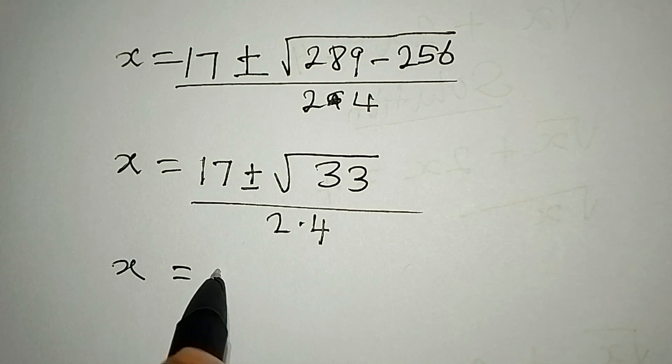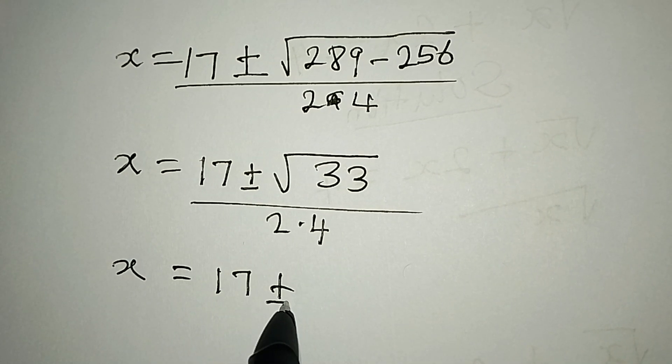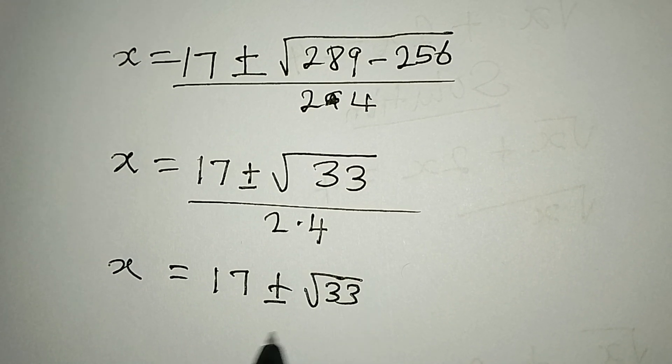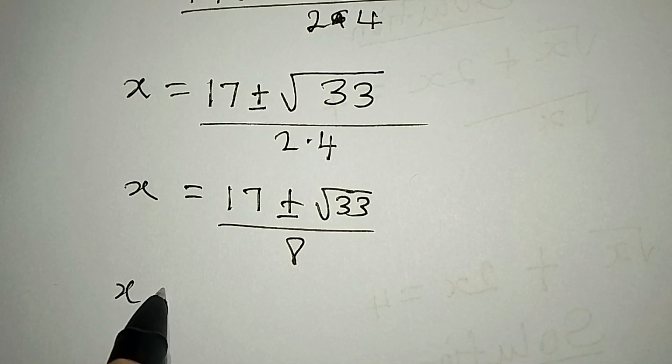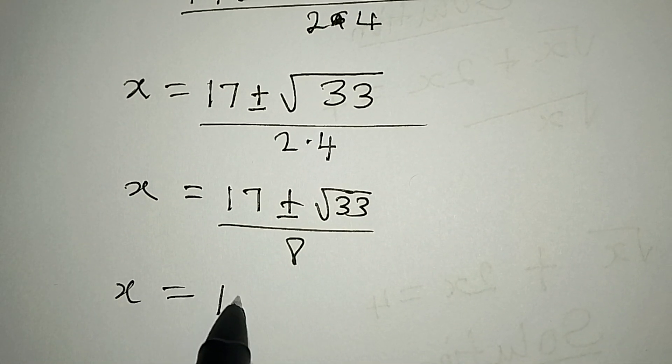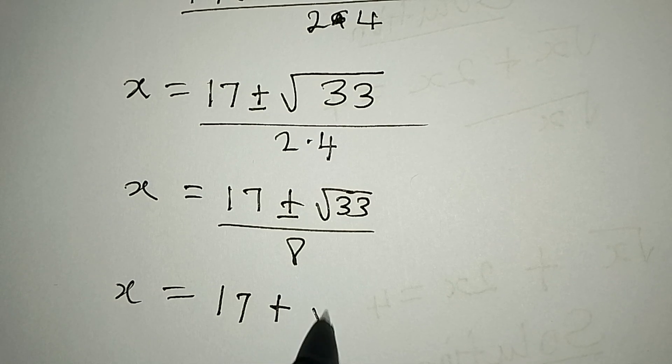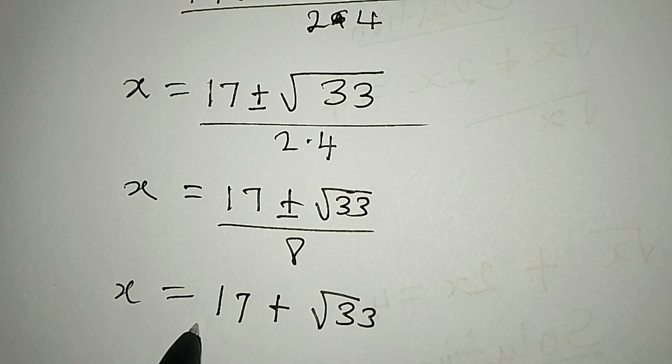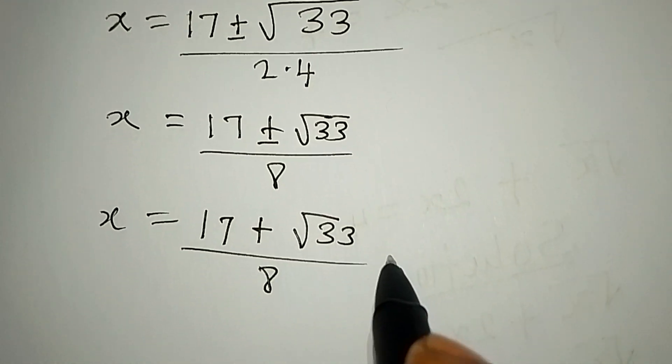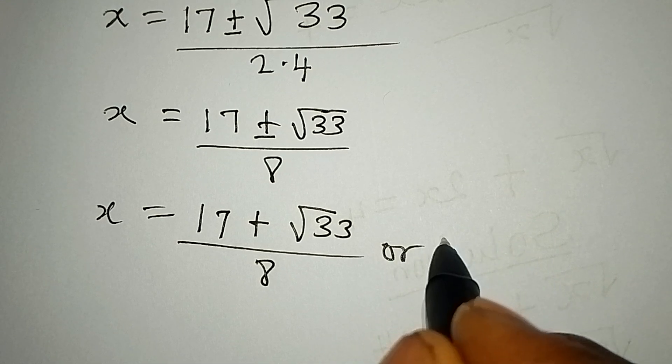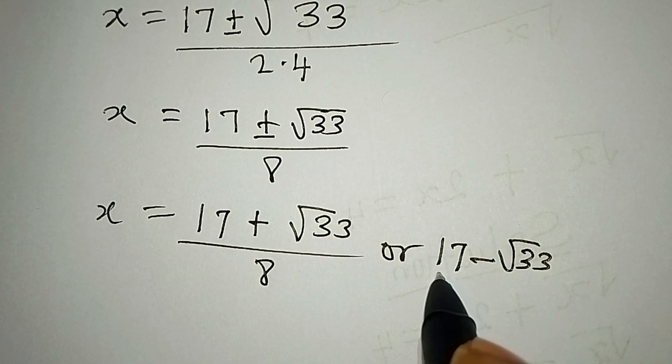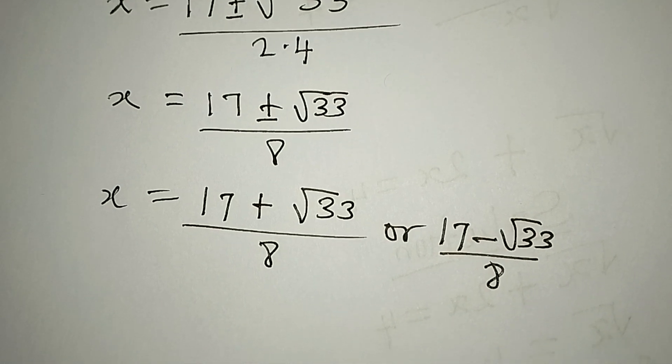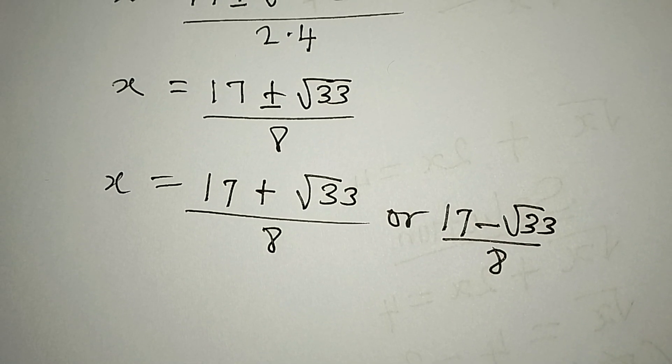x equals 17 plus or minus square root of 33 over 8. So this means that x is equal to 17 plus square root of 33 over 8, or 17 minus square root of 33 over 8. But trust me, both of them cannot satisfy the equation.